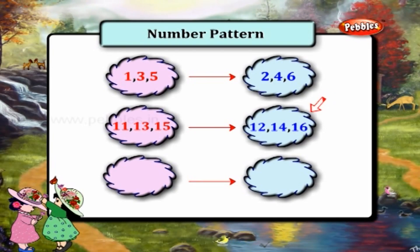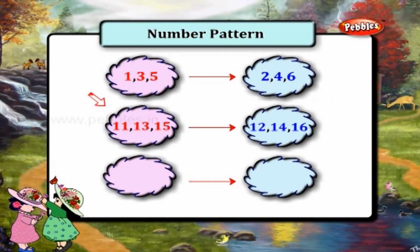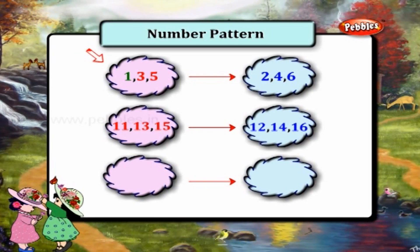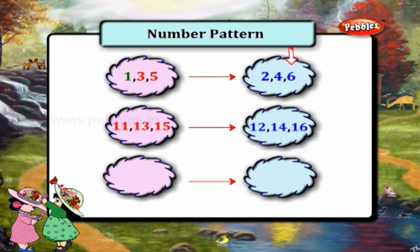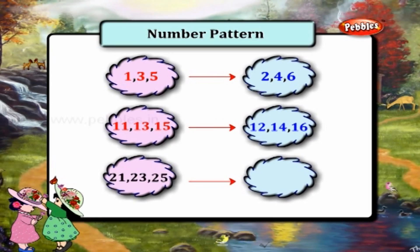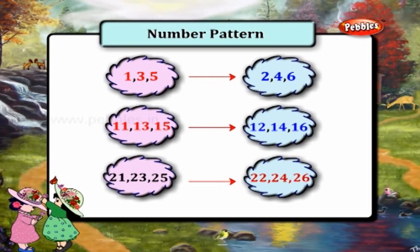The number in the second bubble follows the number in the first bubble. For example, in the first set, in the first bubble we have 1 as the first number, and in the second bubble we have 2 as the first number. 3 becomes 4, and 5 becomes 6. Following this pattern, let's fill in the bubbles: 21, 23, and 25 becomes 22, 24, and 26.